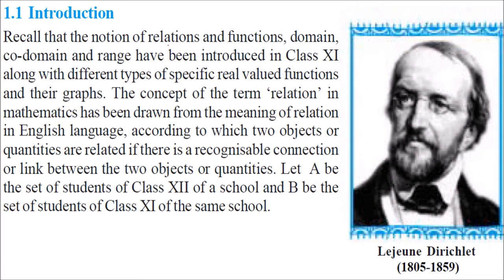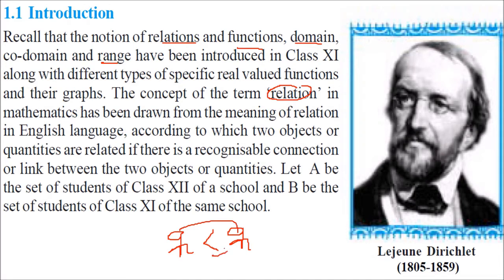In the previous class, we have seen relation and function, domain, co-domain, range, and various other factors like real value functions and their graphs. The concept of relation is actually devised from the English language. For example, if you and your brother are there, you are related to your brother in terms of age or height. You can have a set A of Class 12 students and B as a set of Class 11 students, and there is some relationship you can define.